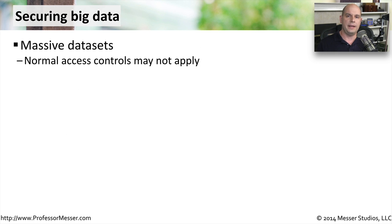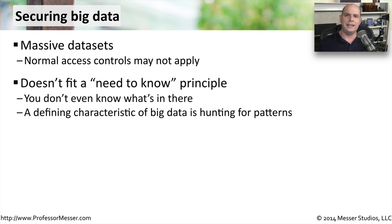The concept and implementation of big data is completely changing how we think about the protection of data. Big data is a huge, massive data set — we're taking information from many diverse data sources and storing it in one central place. That means the normal access controls we might usually apply to a certain type of known data may not apply. You can usually fit a need-to-know principle to a traditional data set, but with big data we may not even be completely sure exactly what type of data we're storing. The objective of big data is to store everything you have, and later sift through it to find relationships and build intelligence from that data.